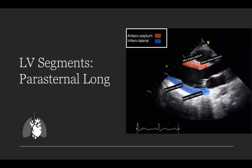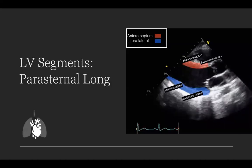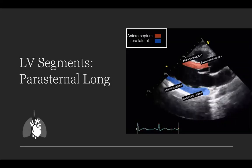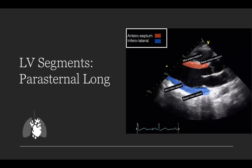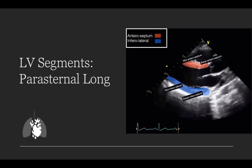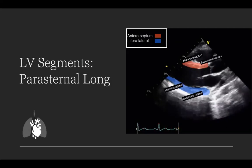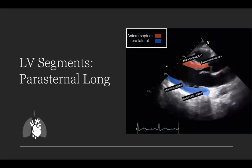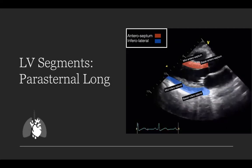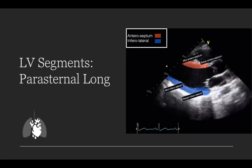In the parasternal long axis view, you can see two walls: the anterior septum, marked in red, and the inferolateral — also called the posterior wall — marked in blue. The anterior septum is supplied by the LAD, and the inferolateral is typically supplied by the RCA. The basal and mid labels on the screen refer to the level within the left ventricle.